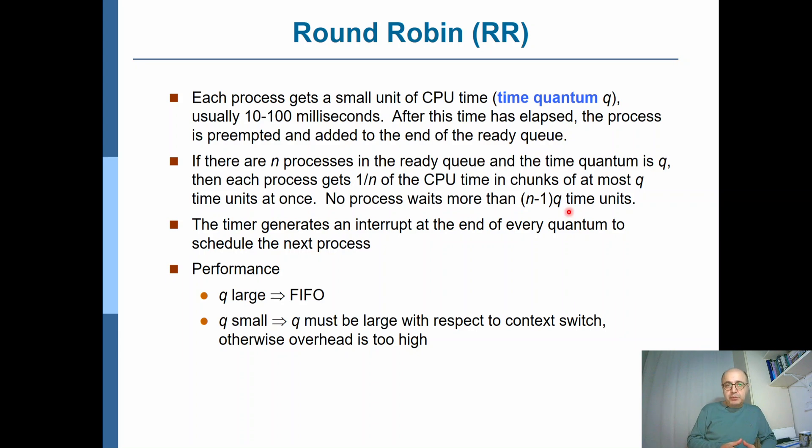When the process reaches the end of its time quantum, the timer generates an interrupt and the operating system takes control because of the interrupt. It does the context switch and then returns back to user mode, and the next process can now resume execution.